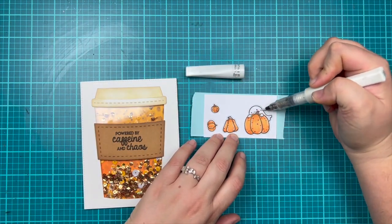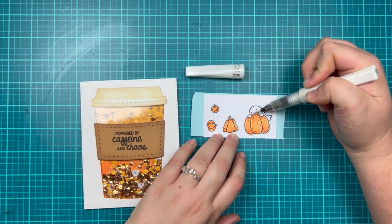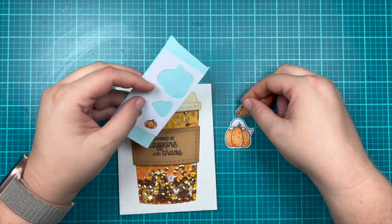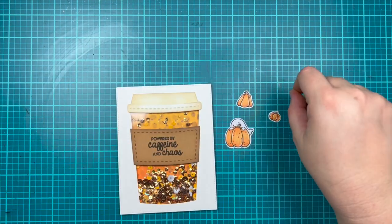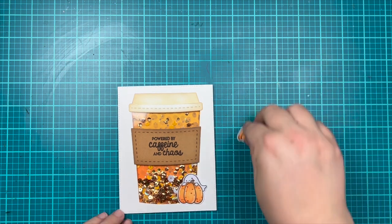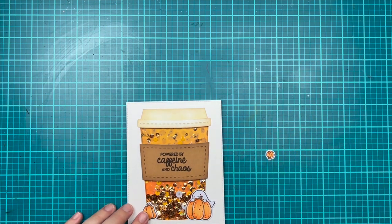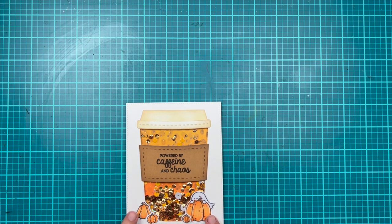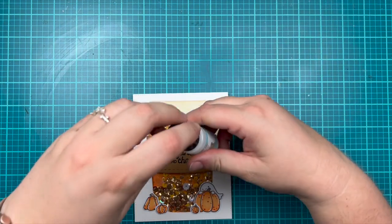I wanted my ghost to have a shimmery look to it, so I use my clear Wink of Stella, which is a glitter pen, to add a little bit of shine to that ghost. Now I peeled off all of my pieces and I'm just going to layer them along the bottom just to add a little bit of fun to the card and give it some Halloween pumpkin fun. That will be my layout.